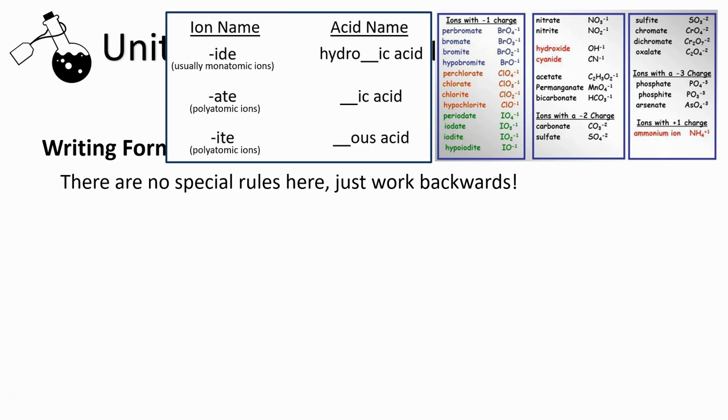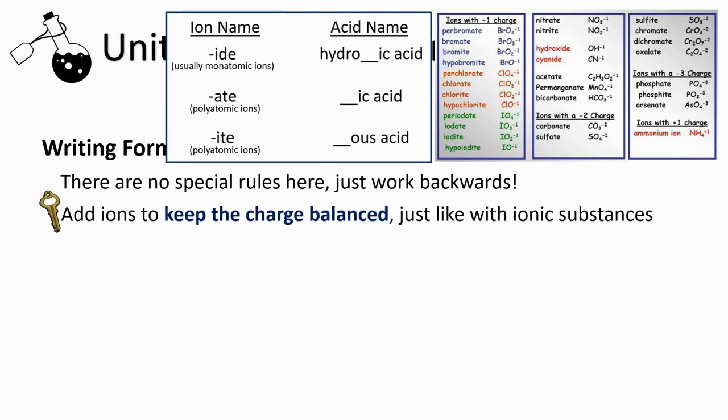The good news is that there's really no special rules here, you just have to work backwards through those acid naming rules. The only kind of weird thing to be aware of is that when you're writing the formula for an acid, you're going to add in multiple quantities of ions to keep the charges balanced.